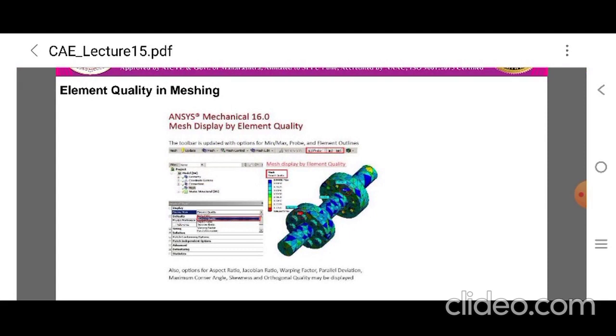The element quality in meshing is shown in figure for element quality coupling with the shaft model in ANSYS ME 16.0.